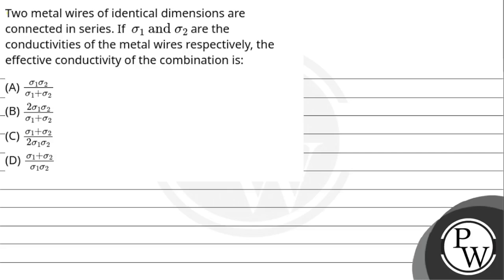Hello, let us read the question. Two metal wires of identical dimensions are connected in series. If σ1 and σ2 are the conductivities of the metal wires respectively, the effective conductivity of the combination is: option A, σ1σ2 divided by σ1 plus σ2; option B, 2σ1σ2 divided by σ1 plus σ2; option C, σ1 plus σ2 divided by 2σ1σ2; option D, σ1 plus σ2 divided by σ1 into σ2.